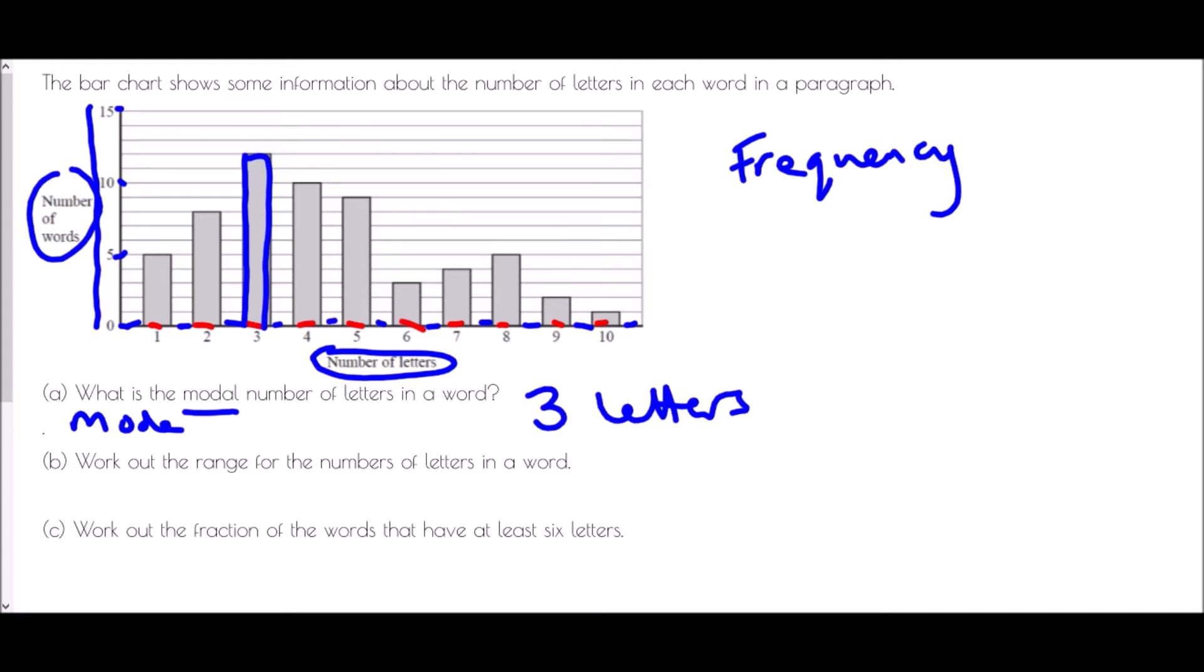It asks us to work out the range for the numbers of letters in a word. Well if we have a look at the table the range would be the biggest take away the smallest. But that is the largest number of letters which in this case is 10 letters take away the smallest number of letters which is one. And so we'd have 10 take away one equals nine letters.